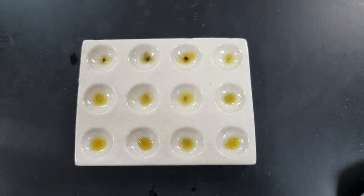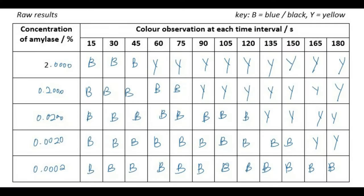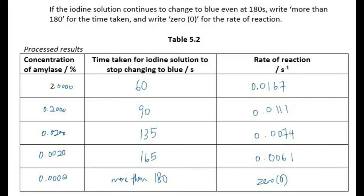Then you repeat the experiment that I just showed you for all the different concentrations. You repeat the experiment with different concentrations of amylase, and you should come up with these results. This raw table is drawn for us in the manual. In the exam, they may give you instructions to draw a similar table.